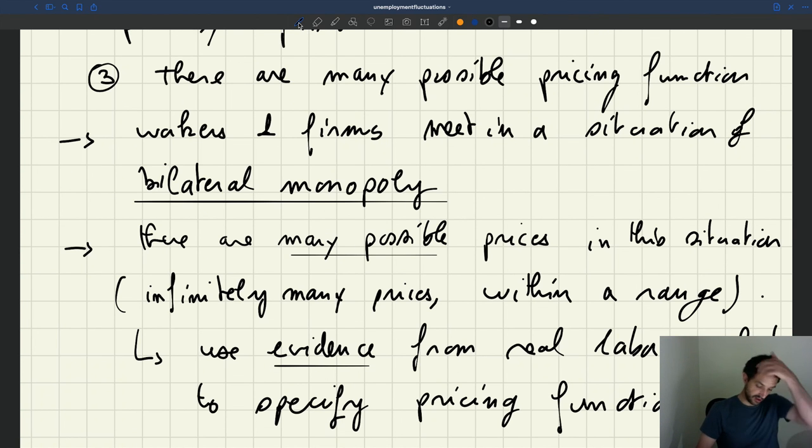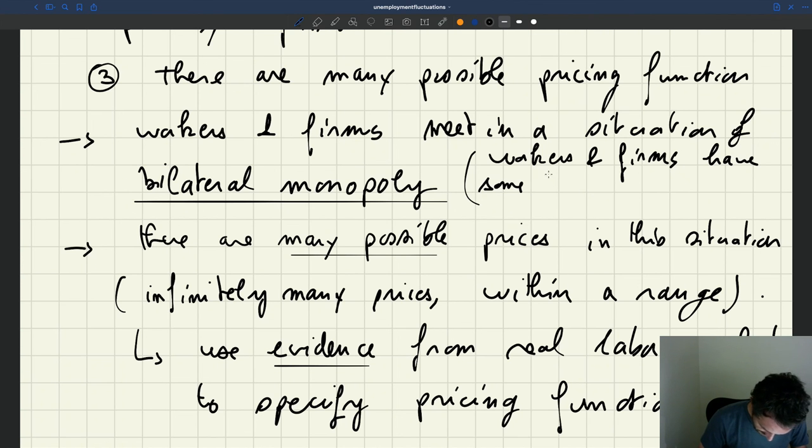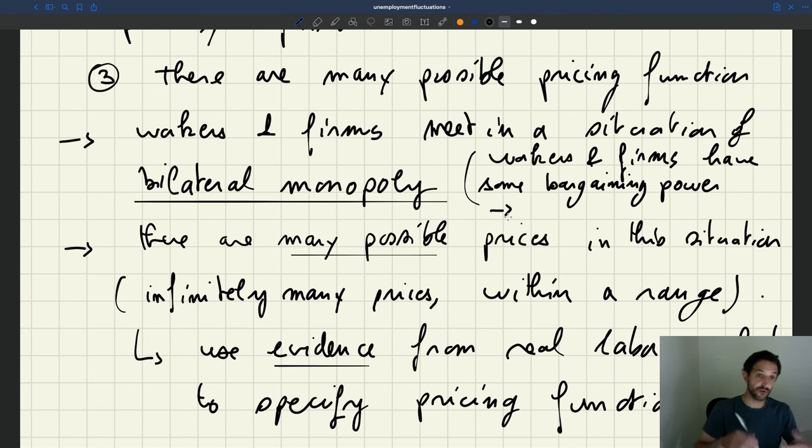Last thing I wanted to say about bilateral monopoly - so what does that mean? As I said earlier, it means that both workers and firms have some bargaining power. It's not only one side of the market that has bargaining power as in a typical monopoly situation. And the reason why, just to wrap up, is that it's difficult to find a new trading partner. It's difficult for firms to find a new worker and for workers to find a new firm. It's difficult to find a new match.